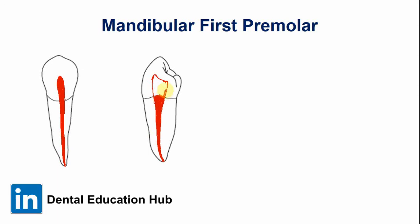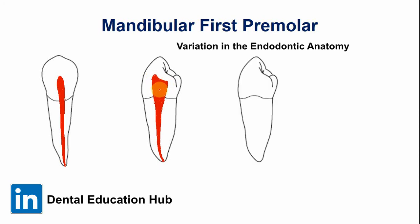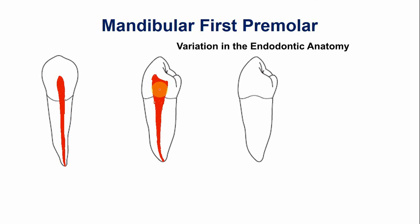Around 75 percent of the mandibular first premolars have a single canal and two pulp horns. There are variations in the endodontic anatomy of the mandibular first premolar, and one of the most common variations is the presence of two canals.